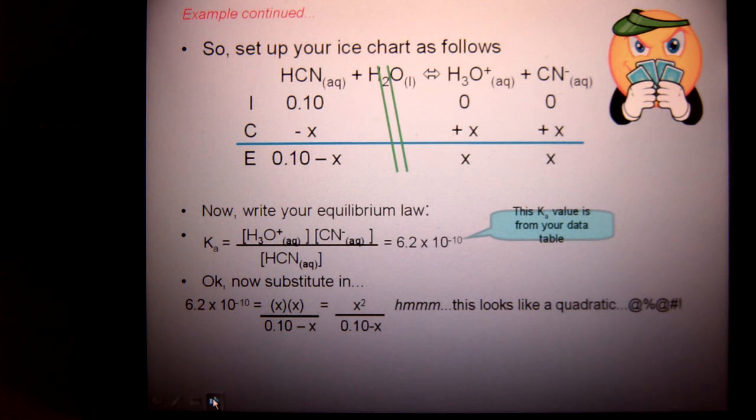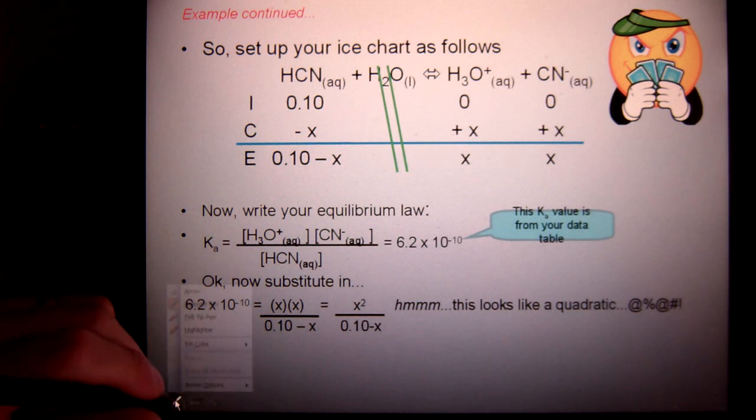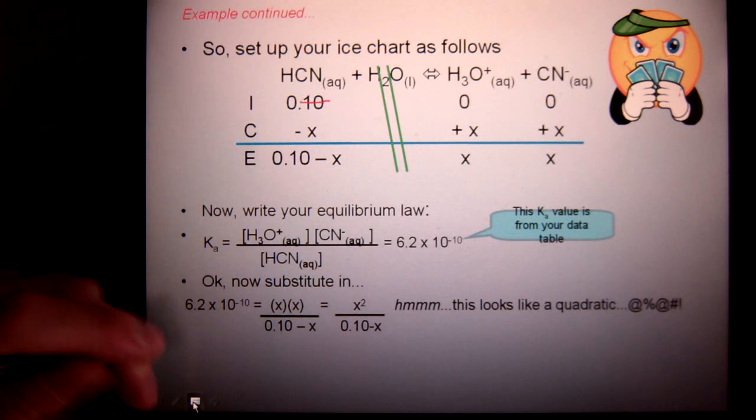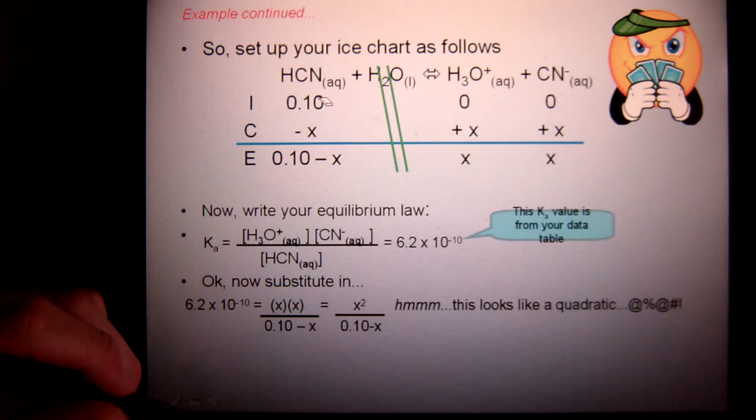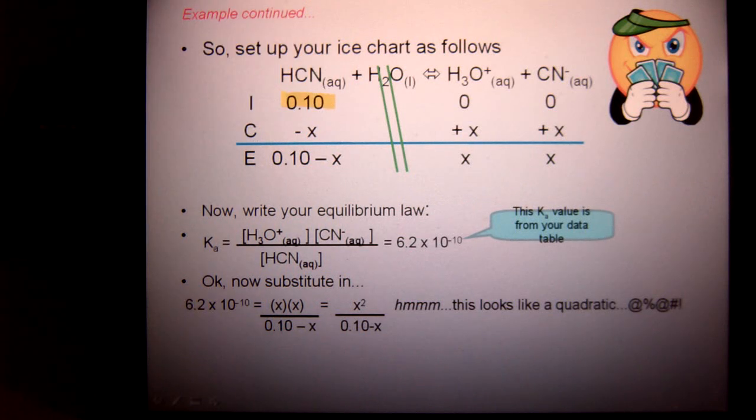So, when I'm doing this, I want to set up an ice chart. Now, there will be a shortcut from here, but this is the derivation. The given concentration, so I was told I had a concentration of 0.10m. That concentration, you will always put in as the initial concentration of your acid.